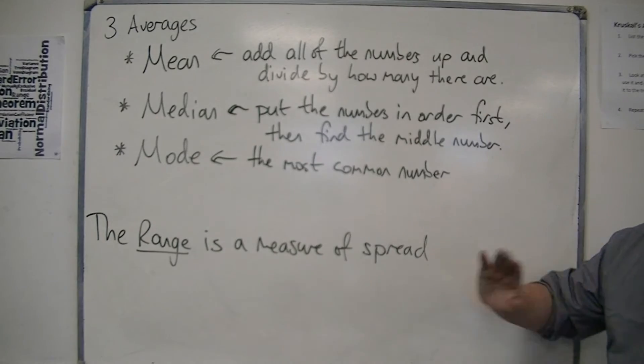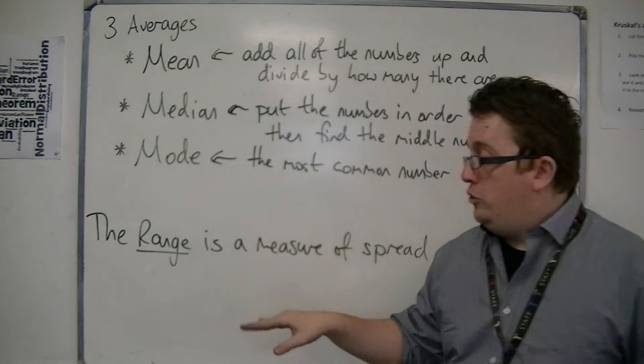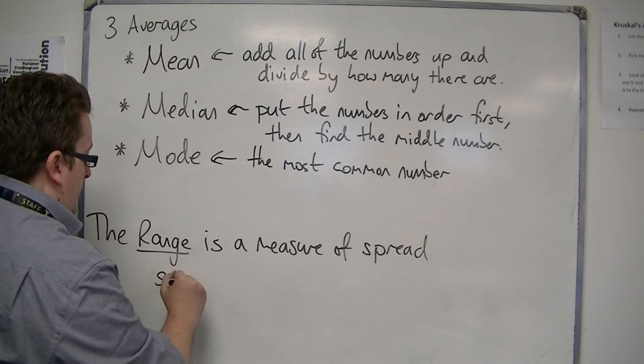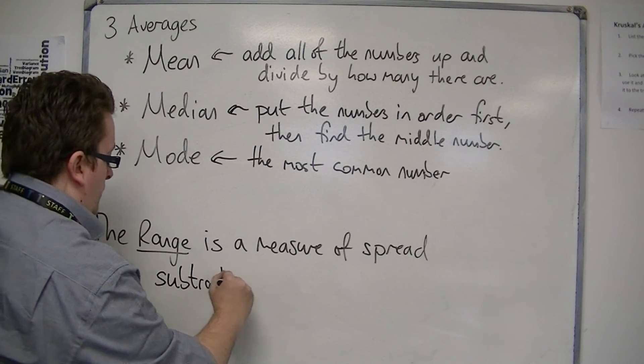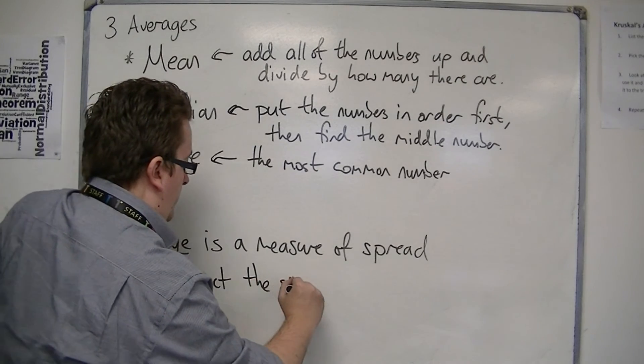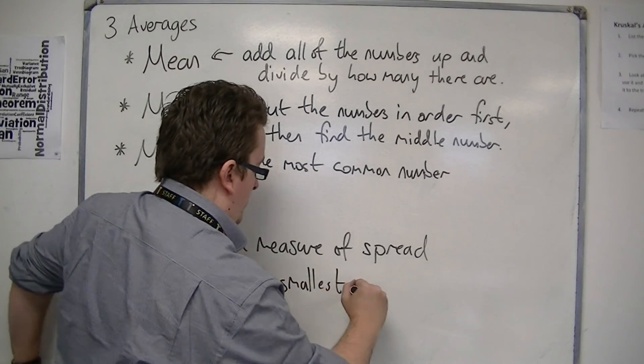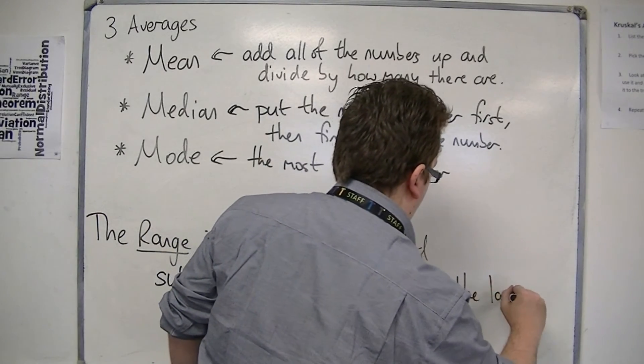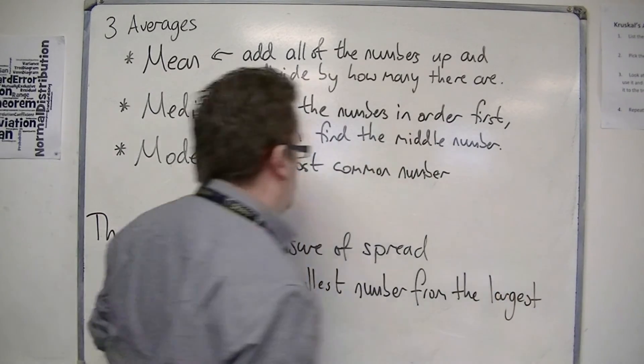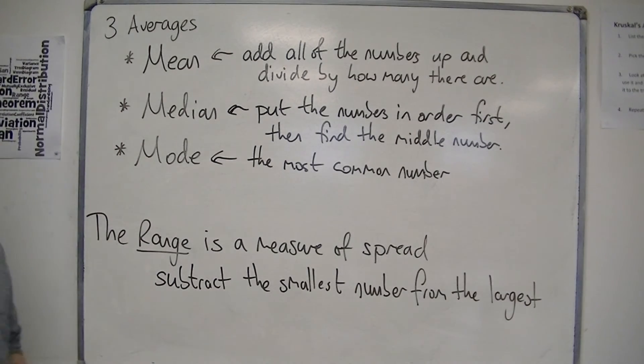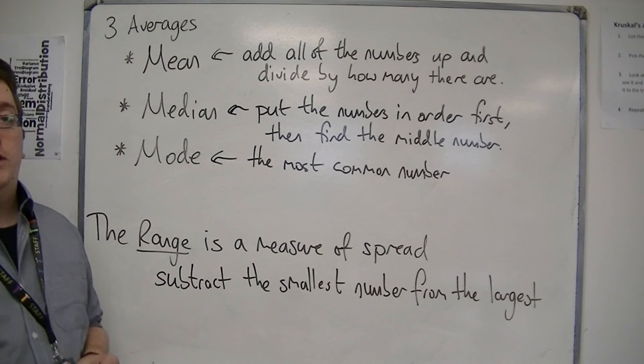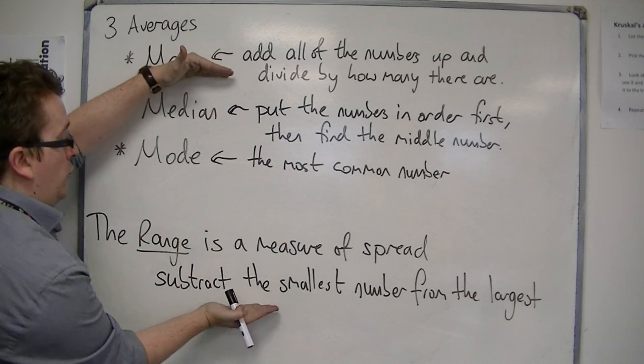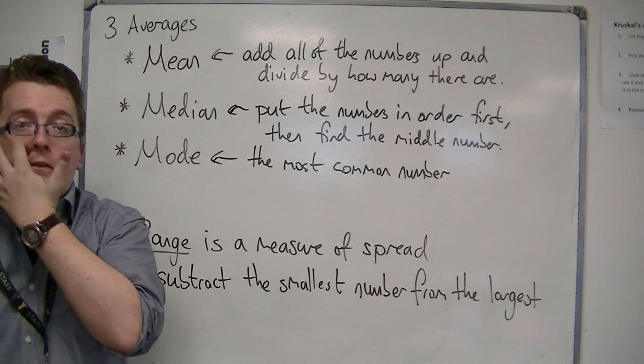And finally, we just need to say, how do we calculate the range? The range is found by subtracting the smallest number from the largest. So you take the largest, you take away the smallest, and that tells you the range of values, how spread out the data is.